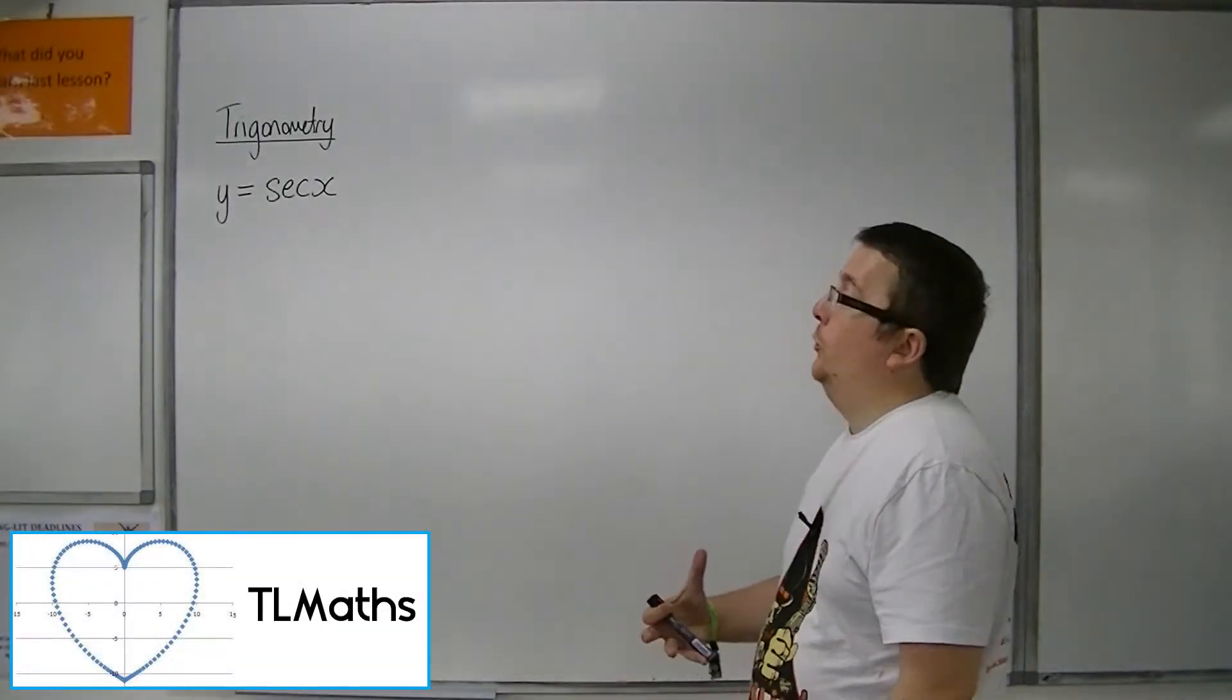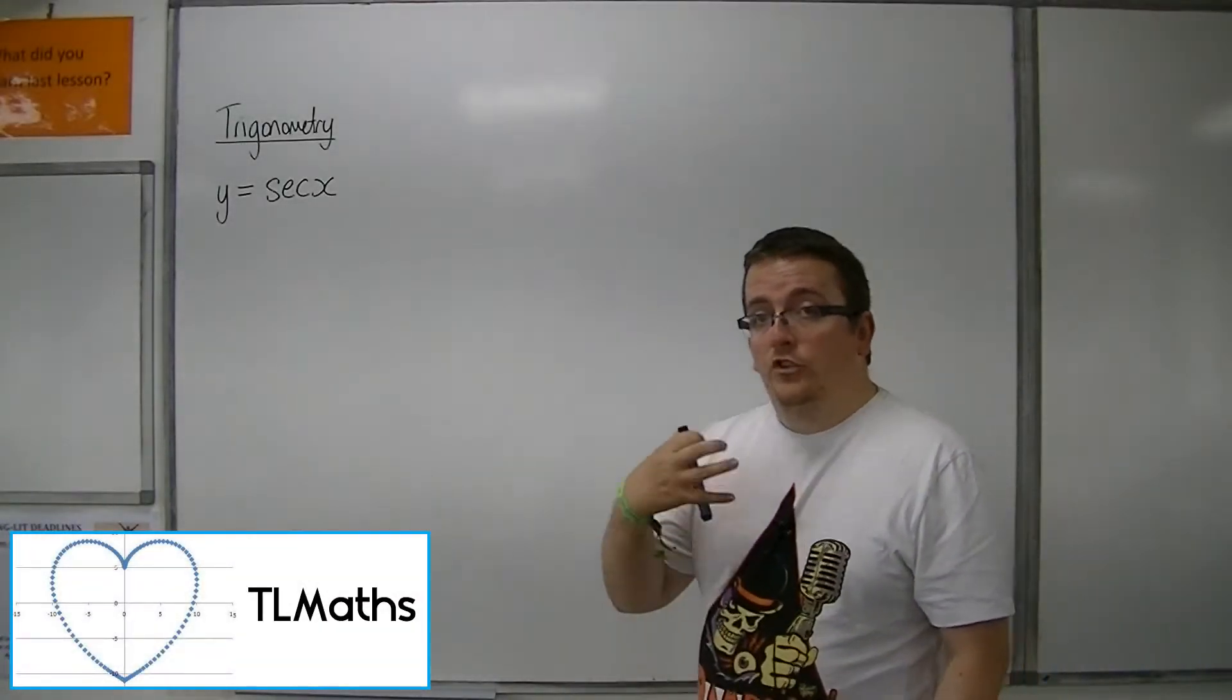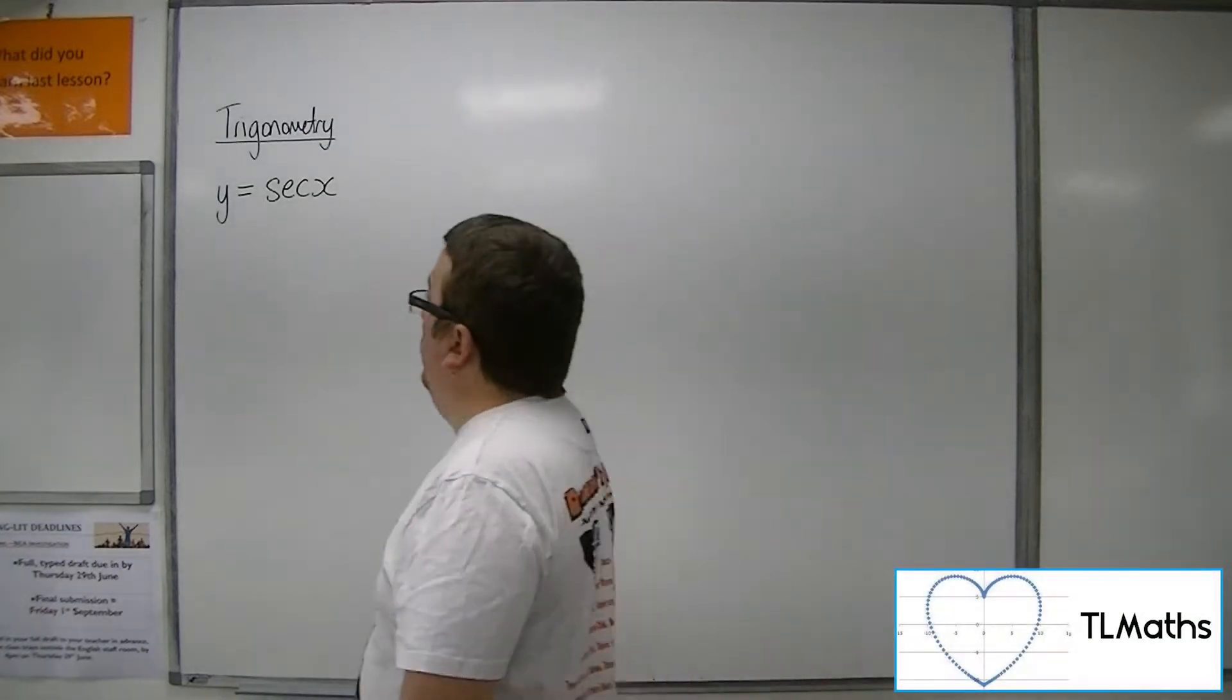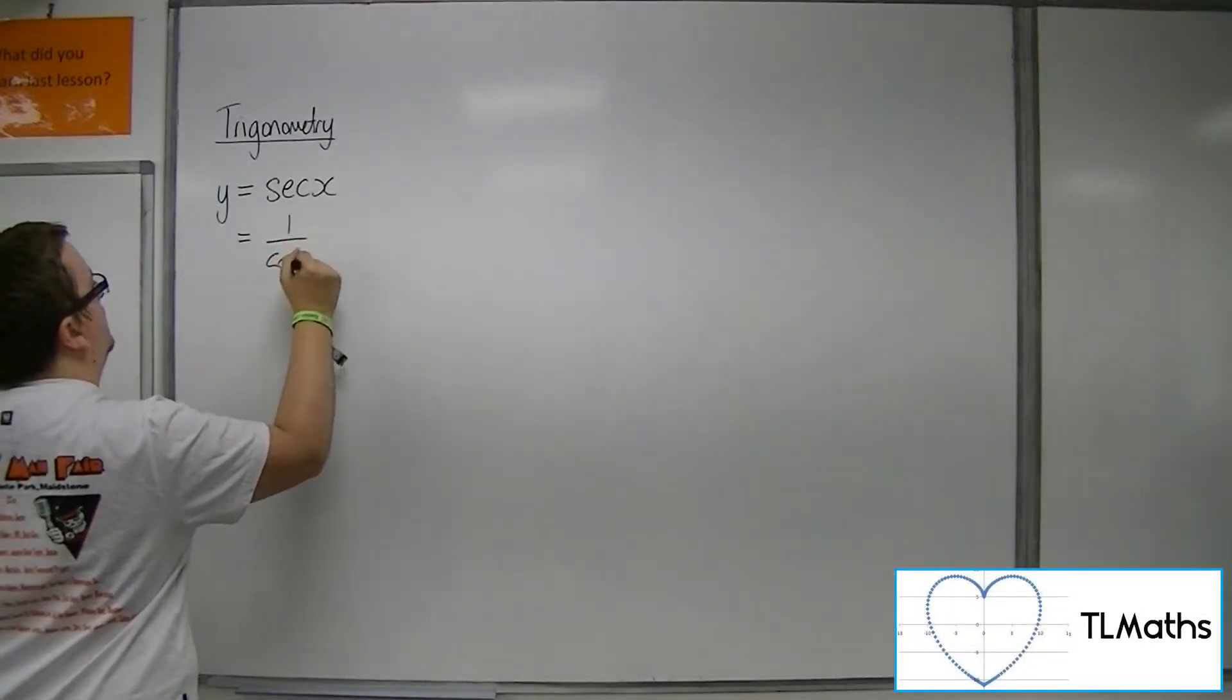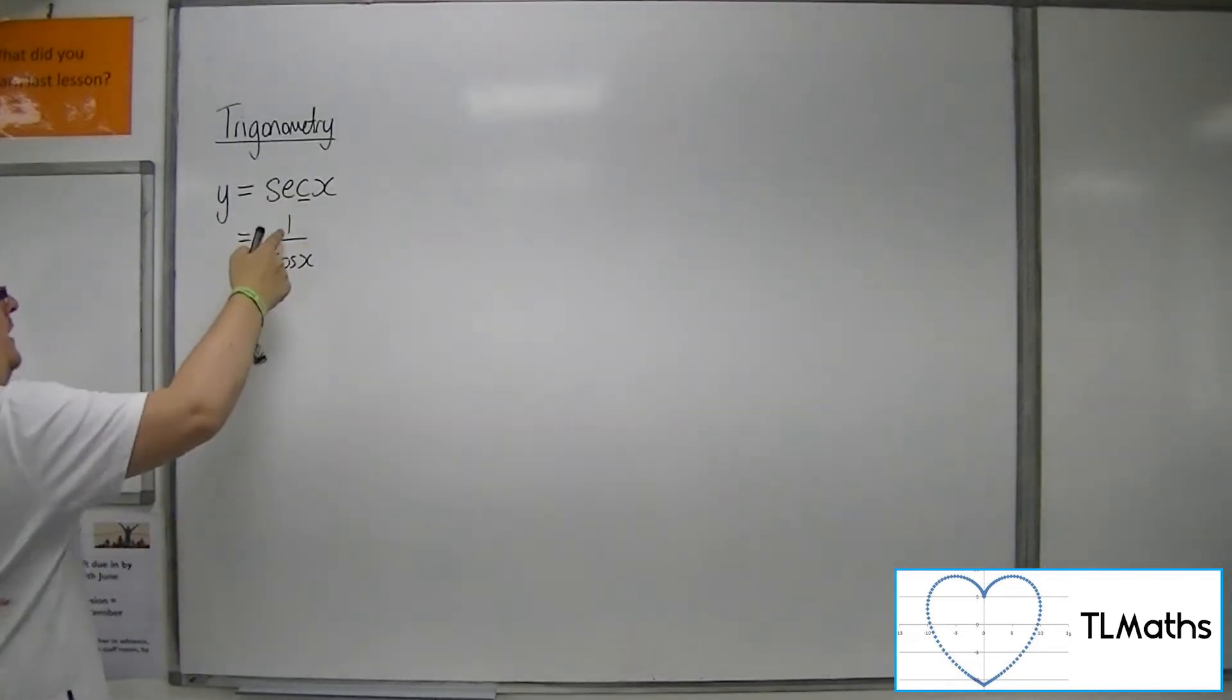We're going to look at y = sec(x), just as we did cosec. Sec is 1 over cos, because of that third letter rule, C for cosine.